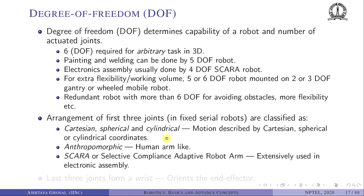The first three joints of fixed serial robots are classified in four ways: Cartesian (XYZ linear motion), Spherical (theta-phi coordinates), Cylindrical (theta-Z coordinates), and Anthropomorphic (like the PUMA — shoulder, upper arm, forearm). There is also the SCARA (Selective Compliance Adaptive Robot Arm), extensively used in electronic assembly. The last three joints typically form a wrist, used for orienting the tool or end effector, while the first three joints position the object in 3D space.